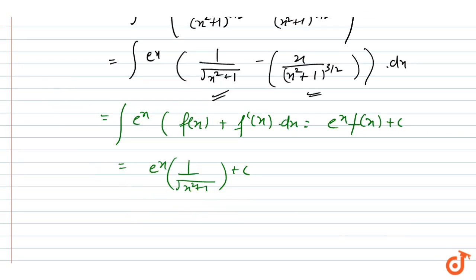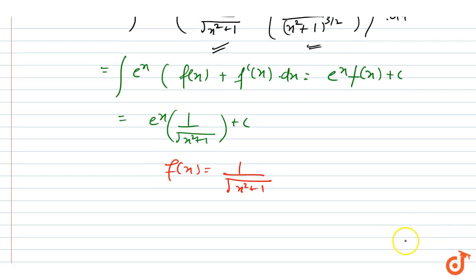f(x) is equal to 1 upon under root (x² + 1). Now, how will we explain f(x)'s behavior? That's why we need to write the graph. f(x) equals 1 upon under root (x² + 1). If x equals 0, then y equals 1.